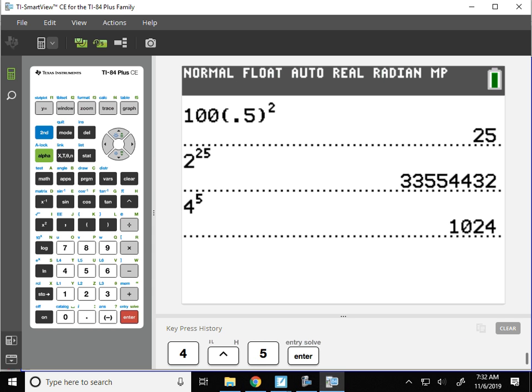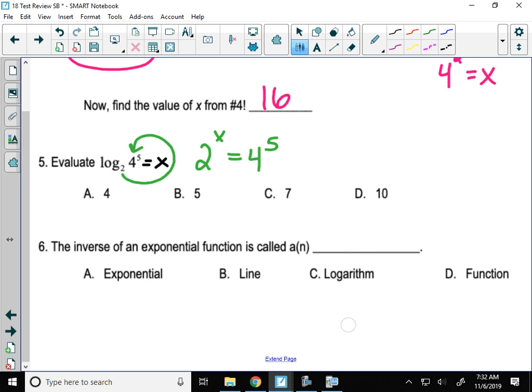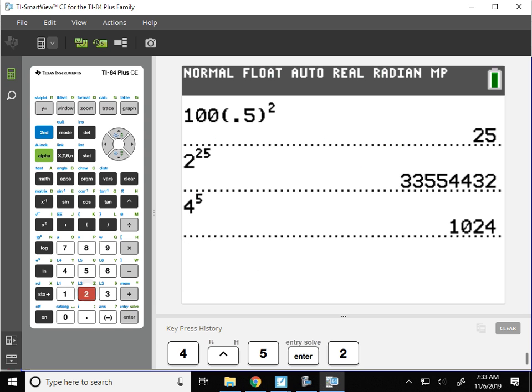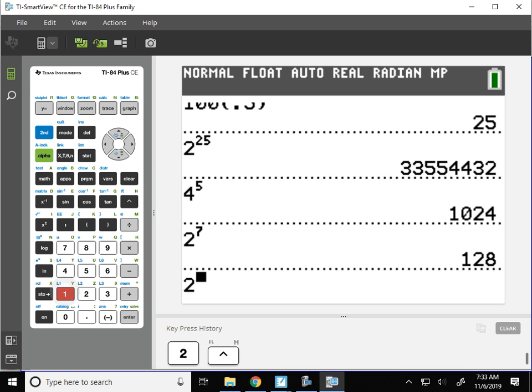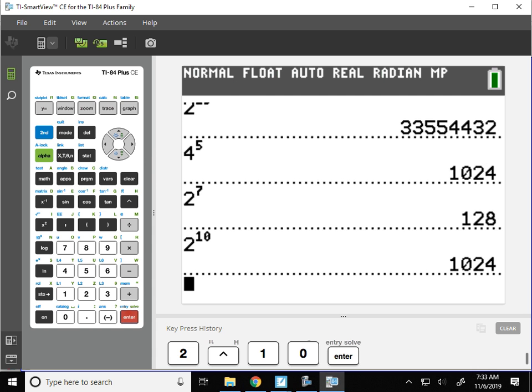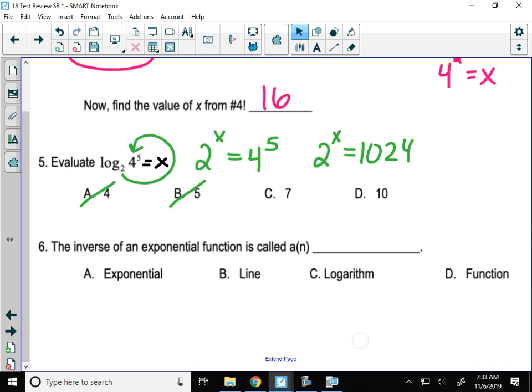4 to the 5th is 1024. So I have 2 to the x equals 1024. And if you don't know what power of x gives you 1024, we can eliminate some. We know 2 to the 4th is 16. 2 to the 5th is 32. So it's either 7 or 10. Just check those in your calculator. 2 to the 7th is 128. 2 to the 10th is 1024. So the answer is going to be D.